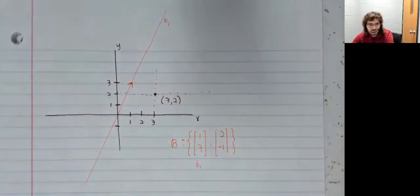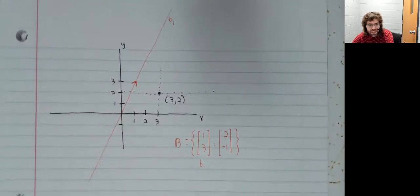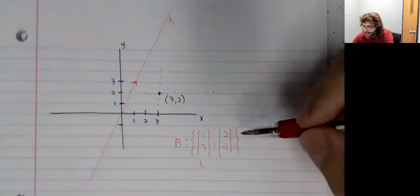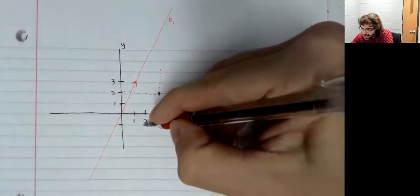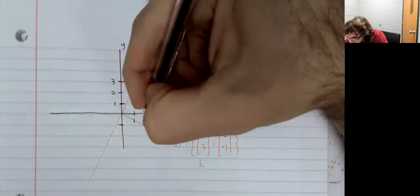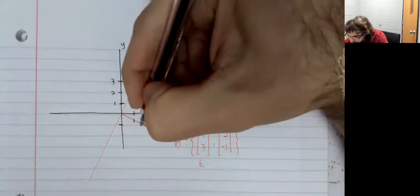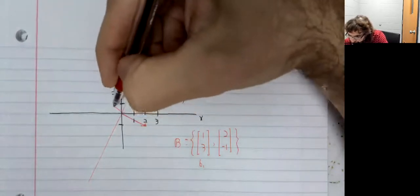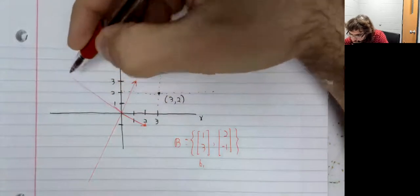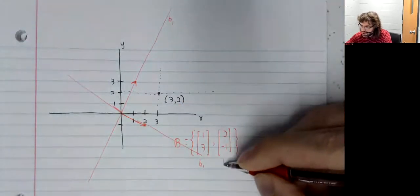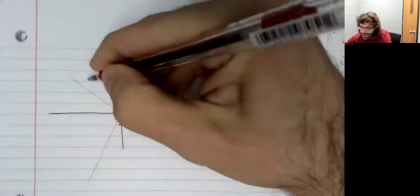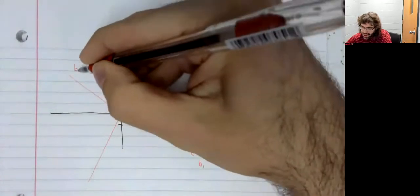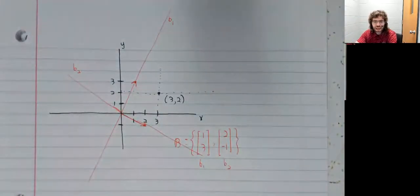Likewise, the vector [2, -1] is here. If we call this vector b2, then this is our b2 axis. So those are our axes.